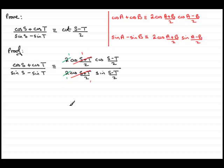So what are we left with? When we tidy this up, what we've got is the cosine of s minus t over 2, and that's all divided by the sine of s minus t over 2.